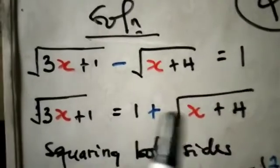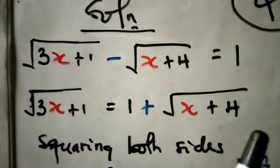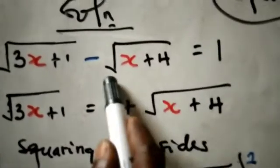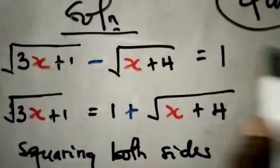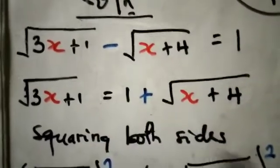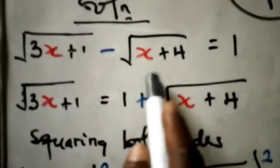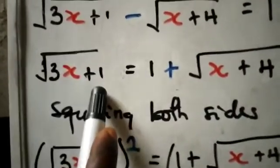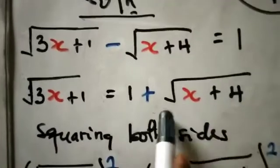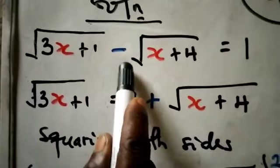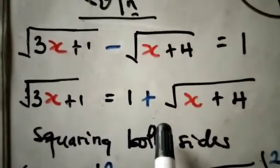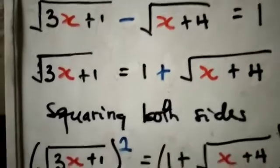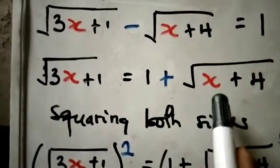Starting with √(3x+1) - √(x+4) = 1, move √(x+4) to the right-hand side. When it crosses the equals sign, its sign changes from minus to plus. So we have: √(3x+1) = 1 + √(x+4). Now x is still hidden inside the radical, so we need to uncover it.